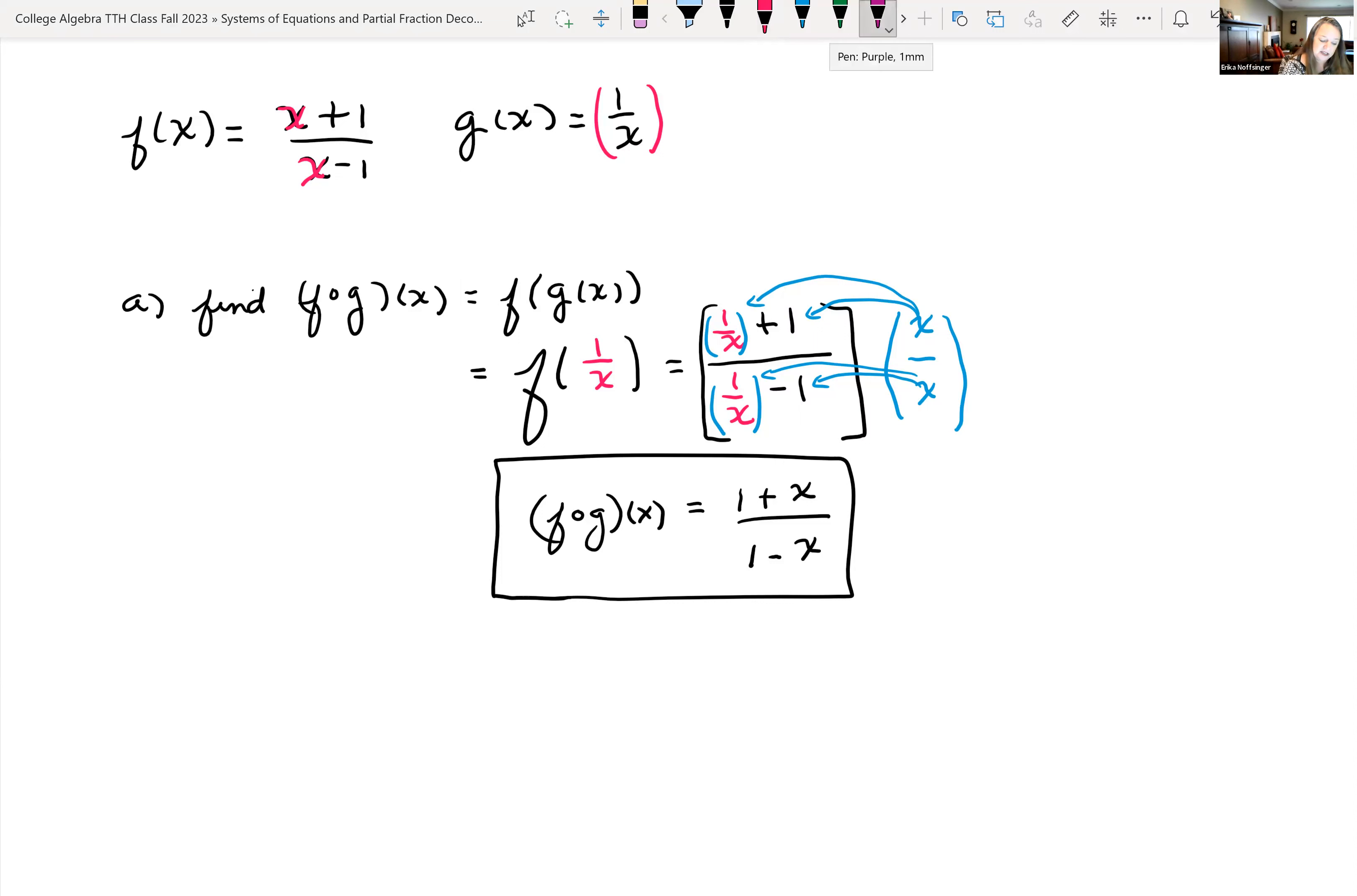So technically we have to look at the inner function, which in this case is g of x, and we need to find the domain of g of x. So the domain of the inner function, g of x, well the trouble spot that we would have there is 0, because I can't have 0 on the denominator. So the domain of g of x is all real numbers, except we can't have x equal to 0. So except x can't be 0. So technically negative infinity to 0 with a parentheses, because it's not including 0 to infinity.